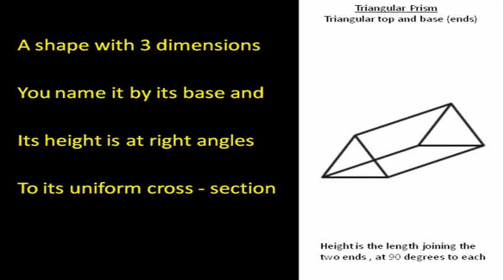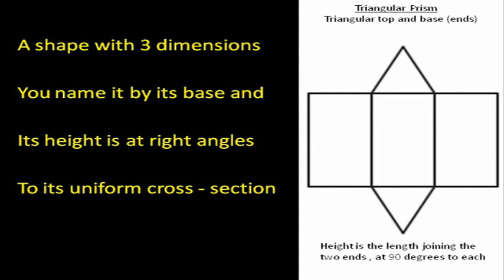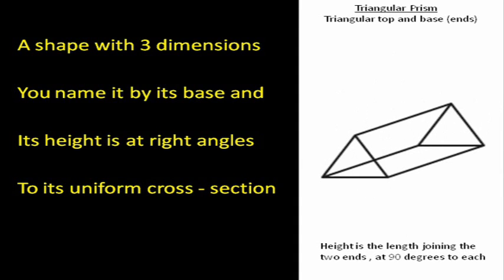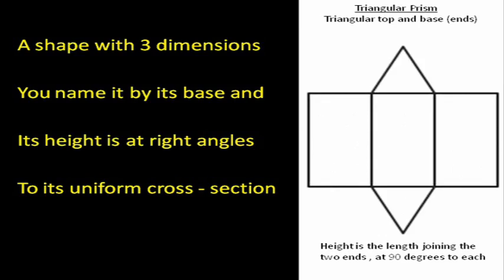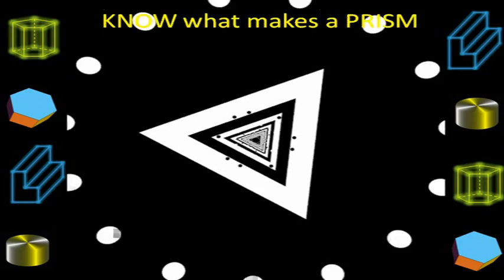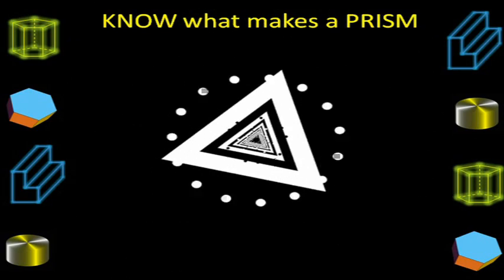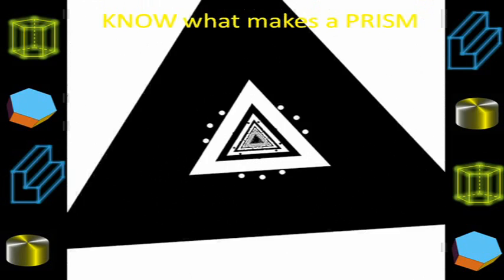A shape with three dimensions, you name it by its base. And its height is a straight edge to its uniform cross-section. So what makes a prism?